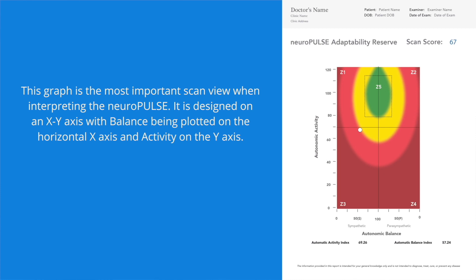Sympathetic dominance plots to the left of the centerline, while parasympathetic dominance plots to the right of the centerline. The horizontal line midway through the graph represents an average calculated threshold for activity within the autonomic nervous system.